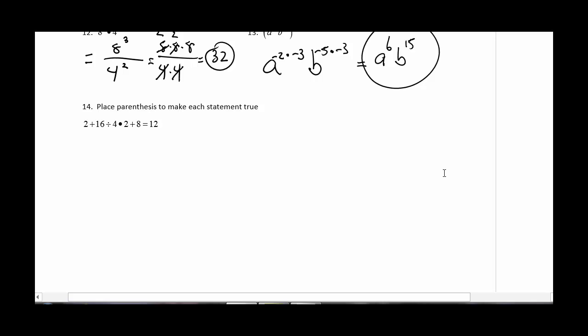If I look at this in order of ops, I would read it left to right and look for whatever multiply or divide happens first, and do it in that order. If I set it up the way I see it, I get 16 divided by 4, which is 4 times 2 plus 8, so that would be 2 plus 8 plus 8, which is 18, and that's not 12.